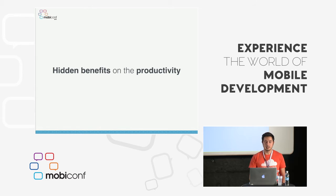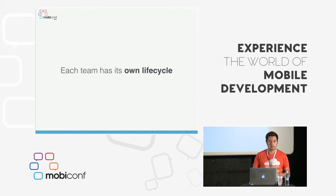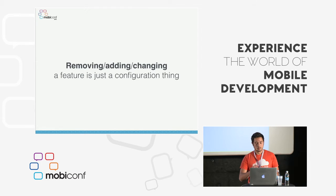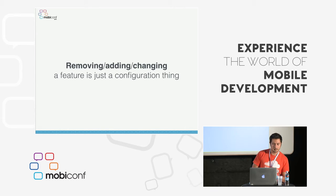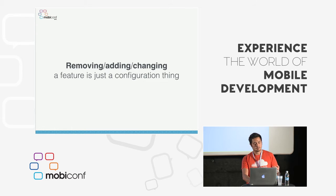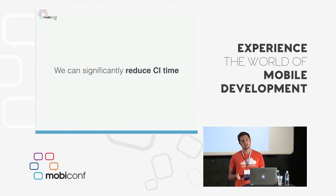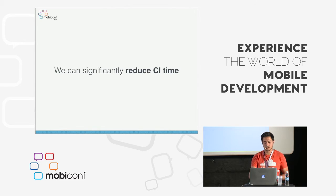This approach has some hidden benefits on productivity. Each team can now have its own lifecycle — teams can maintain their own tests and release whenever they feel ready. Removing, adding, or changing a feature is just a matter of configuration, because we also have feature flags to just turn off features as needed. One more thing: it can significantly reduce CI time, because once you extract the whole search feature, there's no need to run any tests on it if you don't change it — especially the UI tests, which take most of the time.